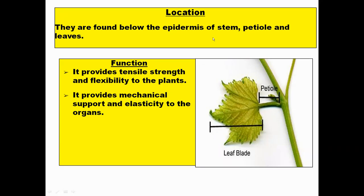Where is collenchyma located? It is found below the epidermis of the stem, petiole, or leaves. Collenchyma provides tensile strength — that is flexibility along with firmness. Because of this flexibility, the plant can withstand high wind velocity; otherwise the plant could be detached from the surface. Collenchyma cells provide mechanical support as well as elasticity to the plant.